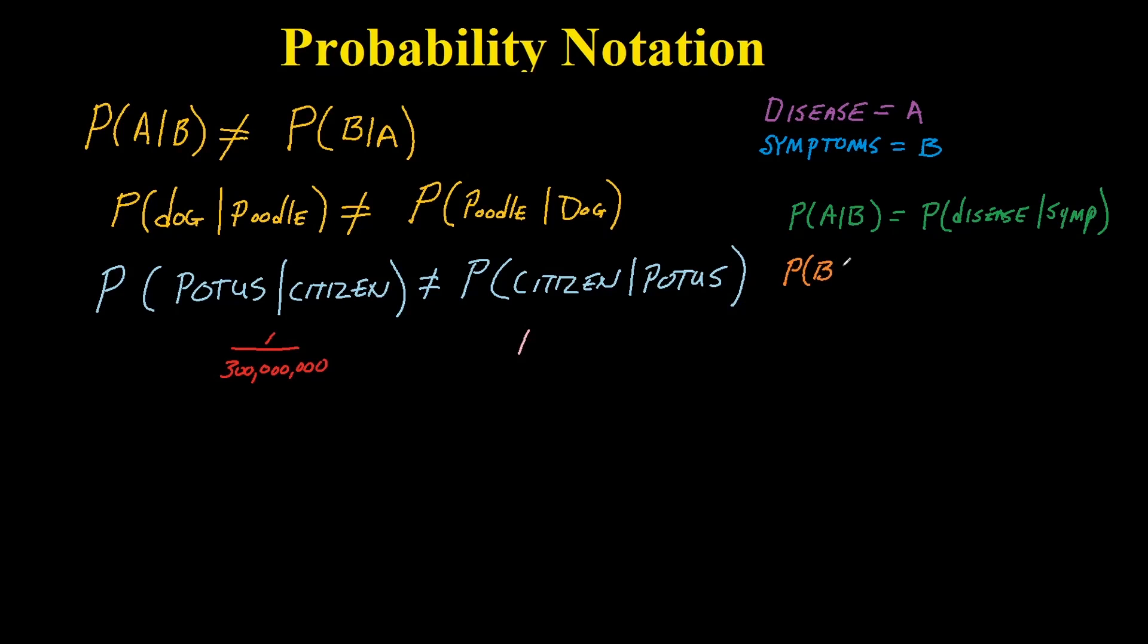The probability of B given A is the probability of observing symptoms given that you know you have the disease. These are completely different probabilities.